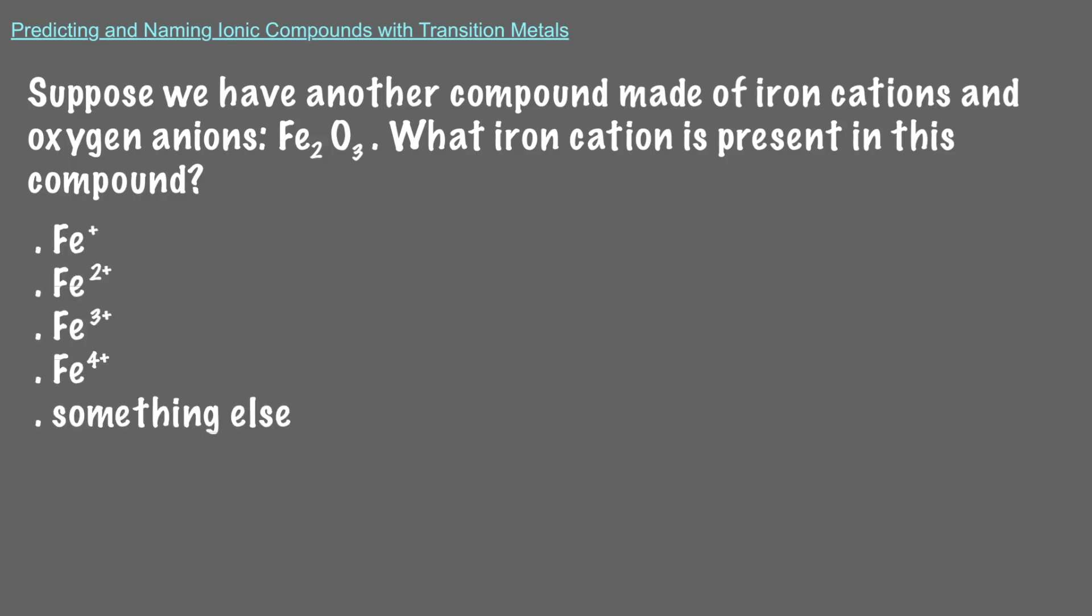That's right, we know oxygen always makes an anion with a negative 2 charge. Since we have 3 oxygen anions in this compound, our total negative charges are negative 6. Since we have 2 iron cations to balance out the negative charges, each of them must have a positive 3 charge. Therefore, the iron 3+ ion is present in this compound.